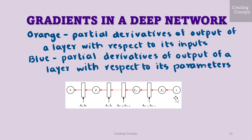In this diagram we see a backward pass in a multi-layer neural network to compute the gradients of the loss function.